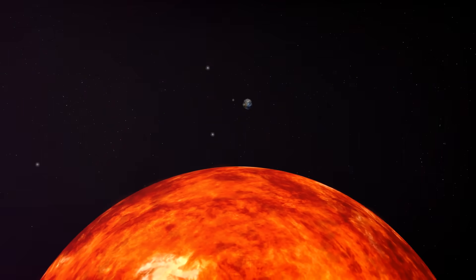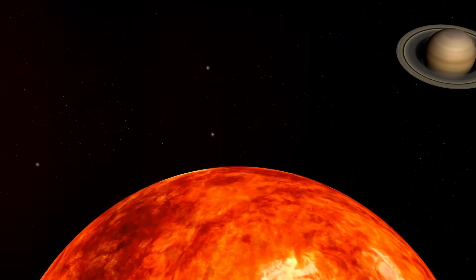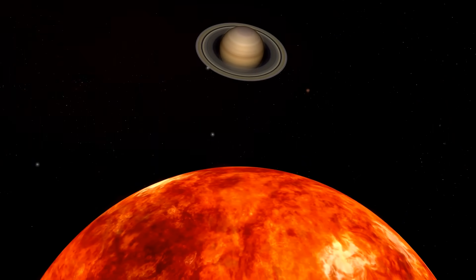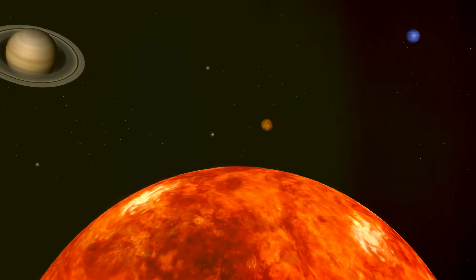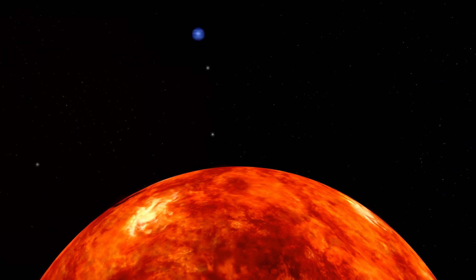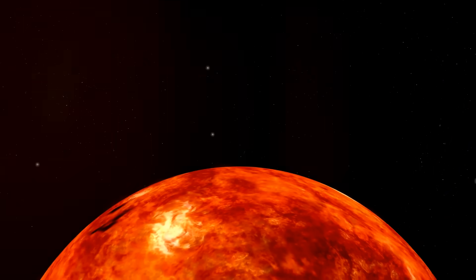IBEX, with its sophisticated sensors, can detect these ENAs. And by measuring the direction from which these atoms come, it can create a map of the boundary of our solar system. But how did this lead to the discovery of the helio tail?